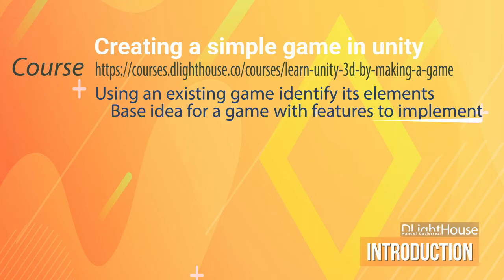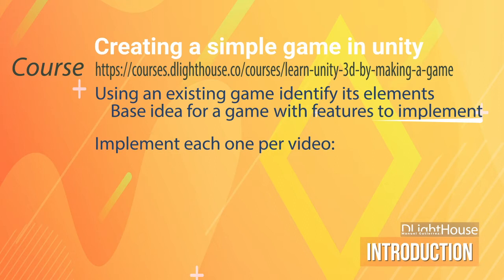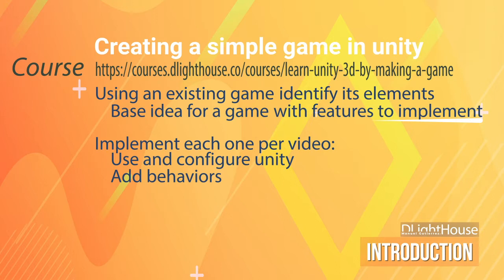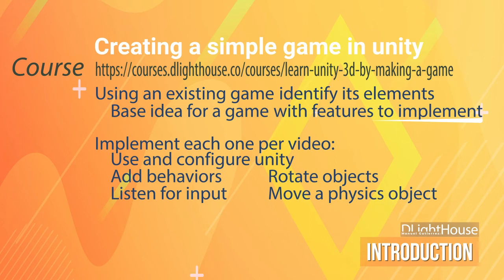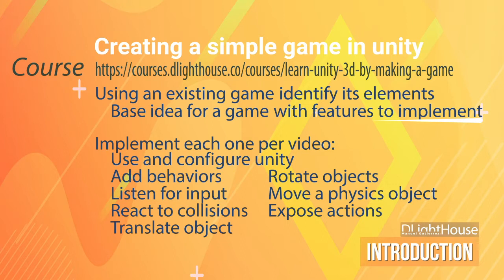After we have identified some of those elements, we will implement each one, where each video focuses on helping you understand how to: use and configure the Unity editor, add behaviors to your 3D objects, rotate objects in 3D, listen for user input like the mouse, move an object using physics, react when two objects collide, expose actions from an object, move an object by translating it, integrate different behaviors into a more complete game, and finally add UI elements in Unity.